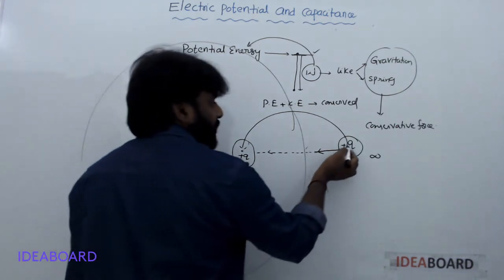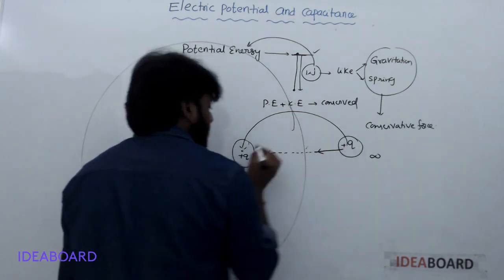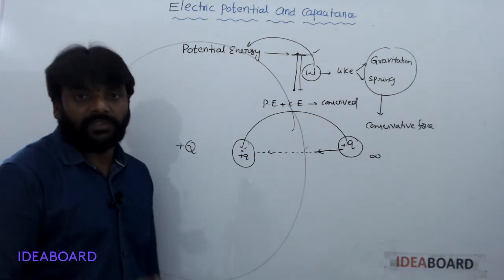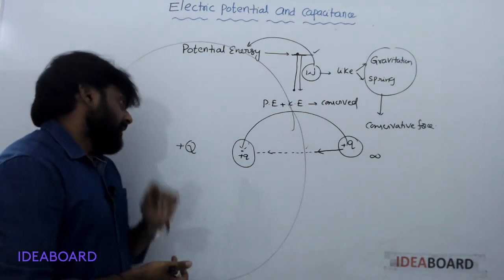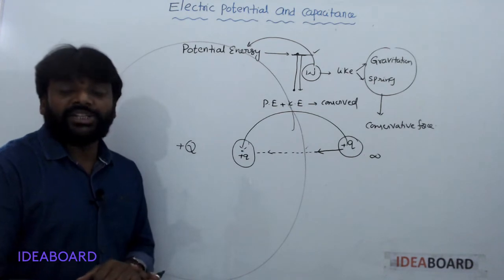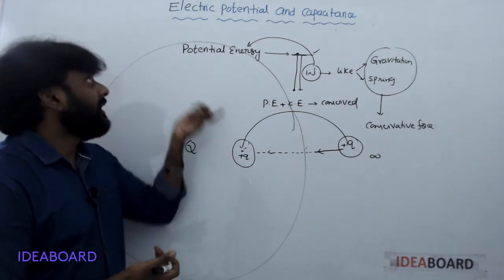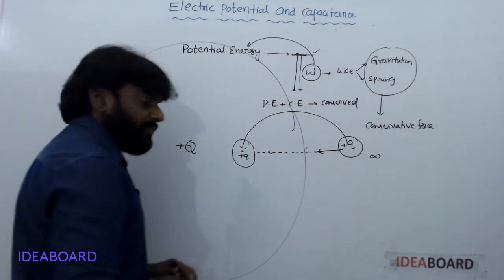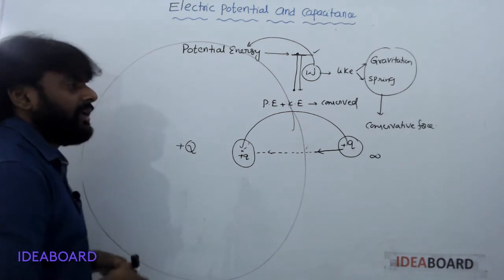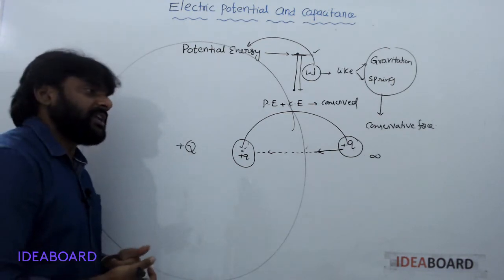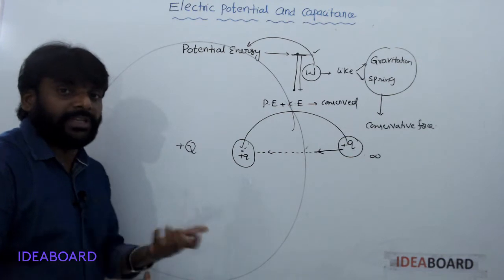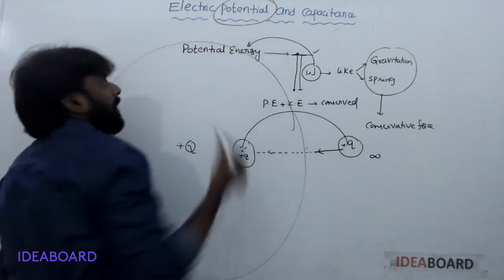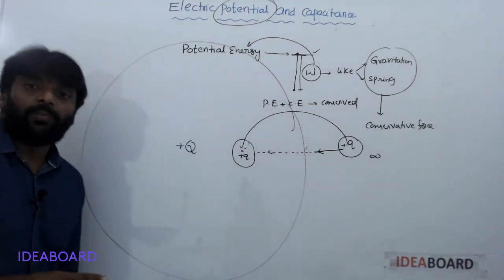A charge taken from infinity to a certain point in this field requires some work, and that work is stored in the form of potential energy in electricity. This is just an introduction. Next, for capacitors — the main purpose of a capacitor is to store electrical energy. The first concept to understand is potential.